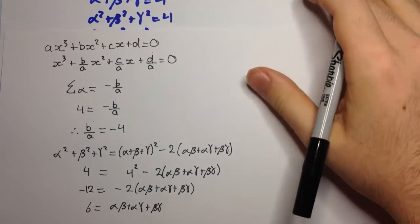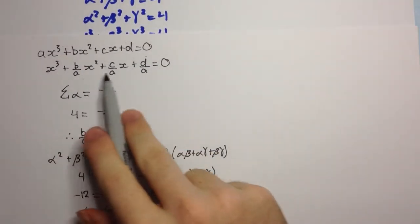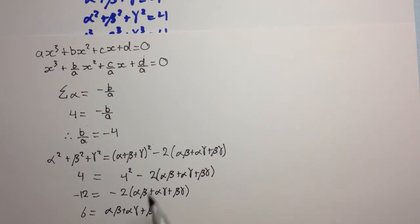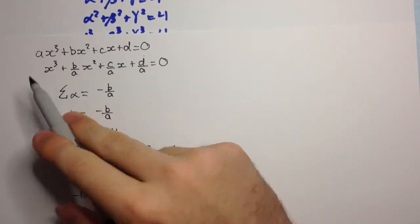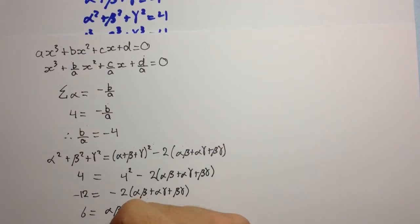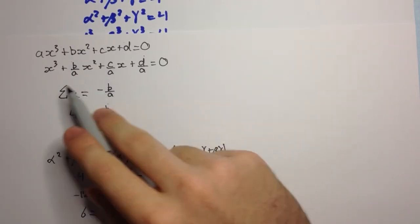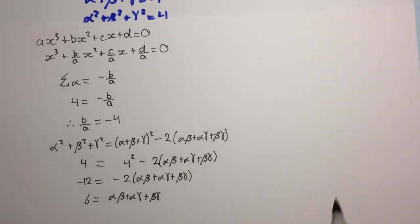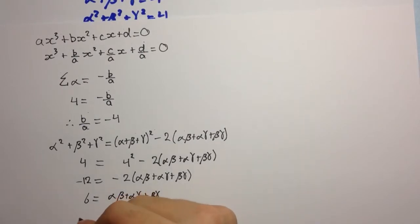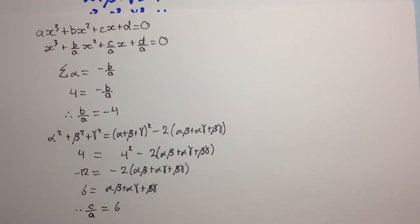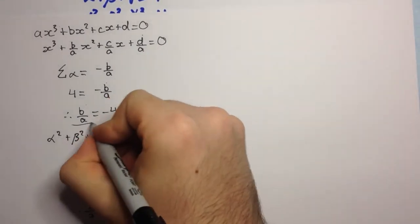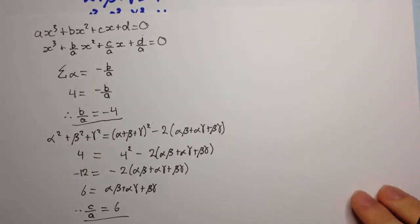Now if we look back at our equation, the sum of roots taken 2 at a time is the coefficient of x divided by the coefficient of x cubed. So that's positive c over a divided by 1, which is just c over a. Therefore c over a equals 6. Let's underline these results so we can refer to them later.